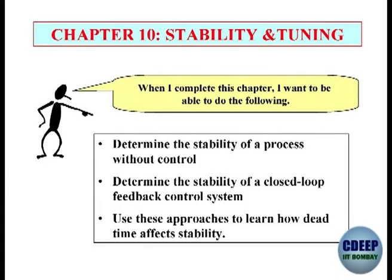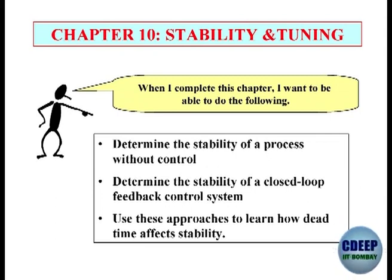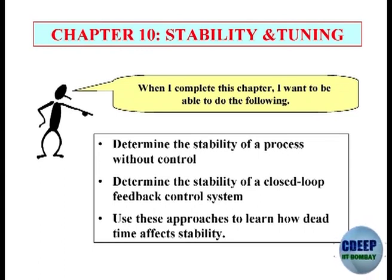This chapter is on stability and tuning. It is not something that is mathematically new, but we will be seeing mostly in the time domain what happens when there is dead time, how it affects stability, and it requires detuning of the controller. The main topics are: stability of a process without control, stability of a closed loop feedback control system, and how to use these approaches to see how dead time affects stability.